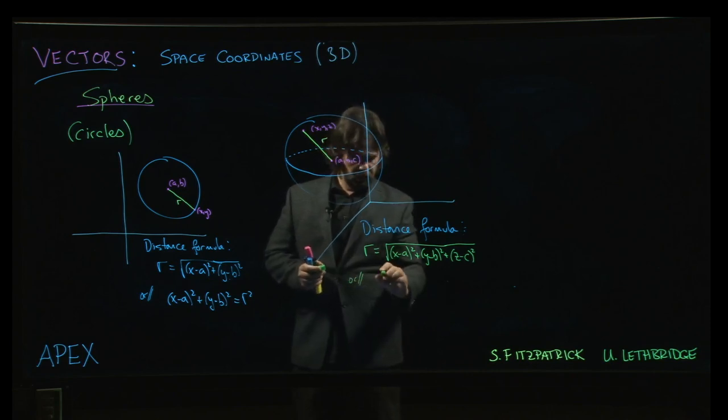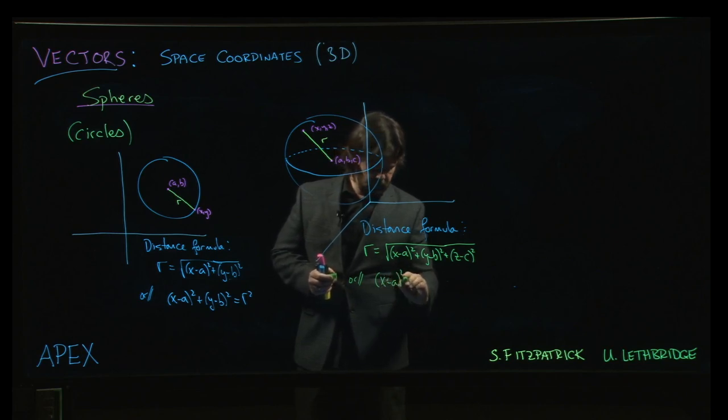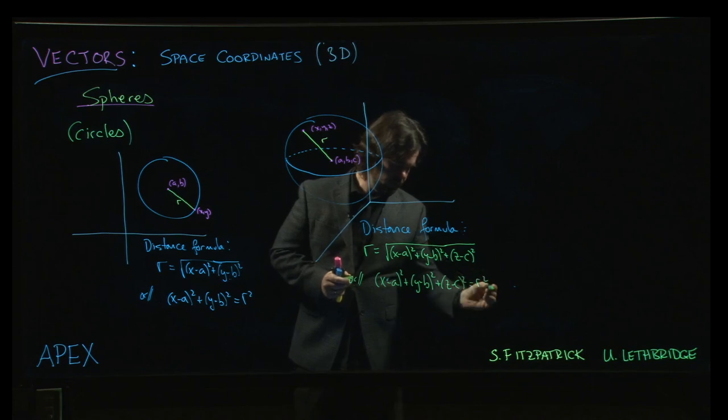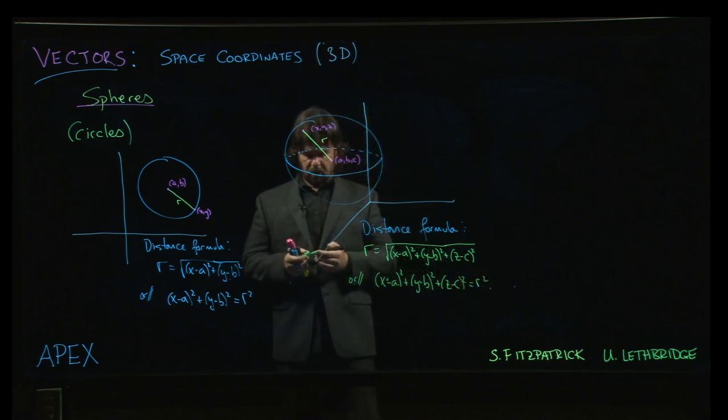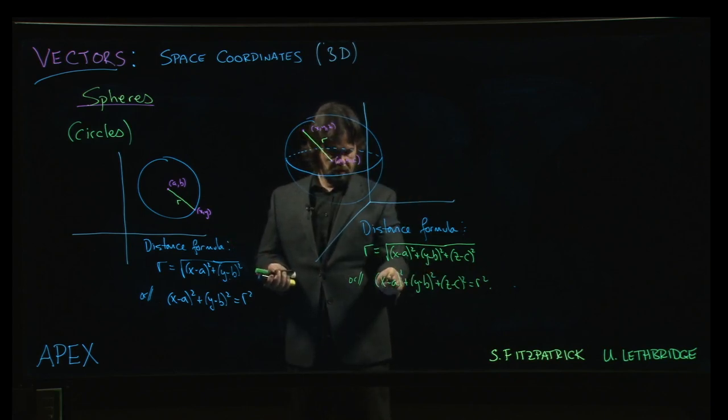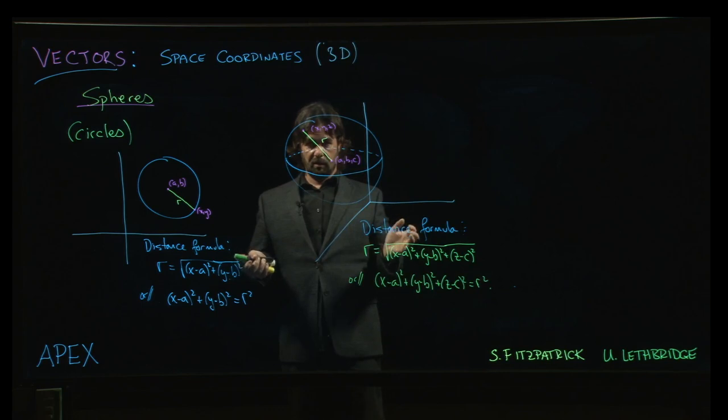And often, just like we do in two dimensions, we might prefer to square both sides of that equation. x minus a, all squared, y minus b, all squared, z minus c, all squared, is equal to r squared. Okay? So that's sort of the standard formula for a sphere in three dimensions, giving you the center at a, b, c, and the radius of r, giving you the location and size of the sphere.